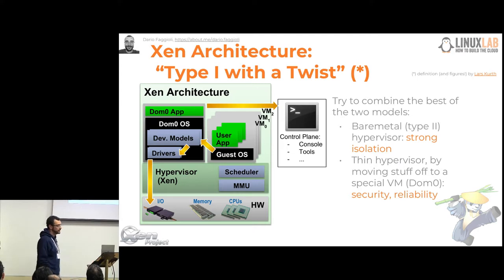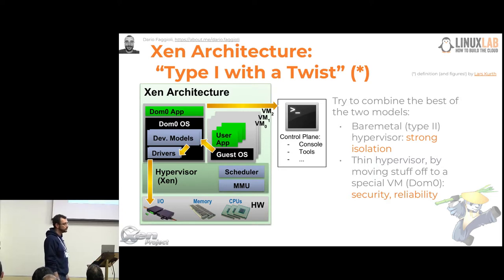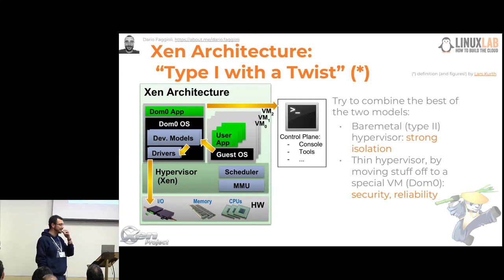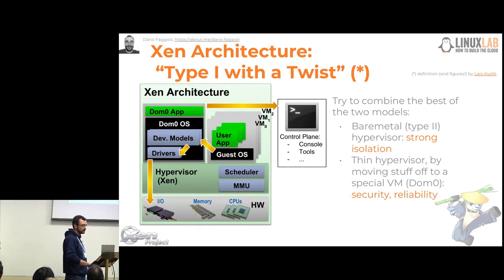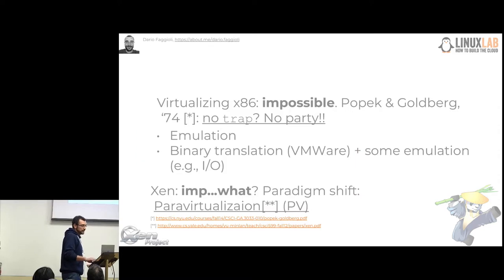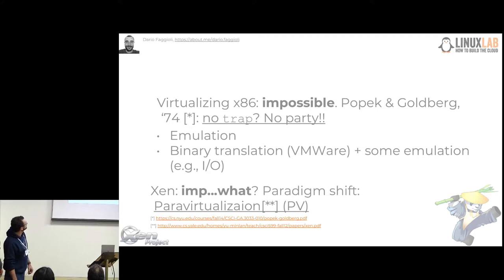Xen is, to all effects, a microkernel — to avoid code duplication and to take advantage of the high degree of support that, for example, Linux has. And in fact, most of the time this special virtual machine which has device drivers for IO in it is a Linux virtual machine. So, what are the virtual machines that you run on Xen, and what kind of virtualization do they use?